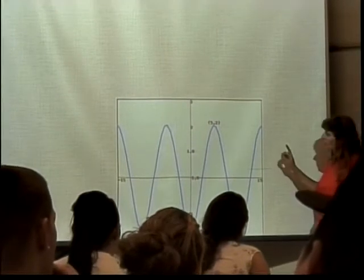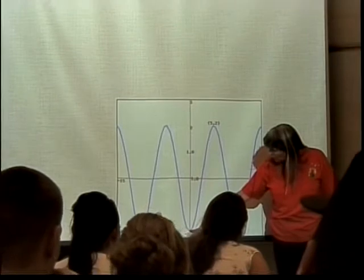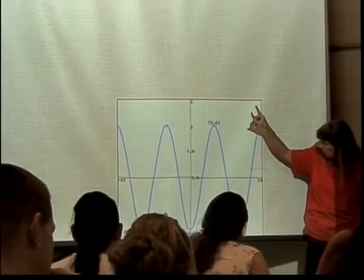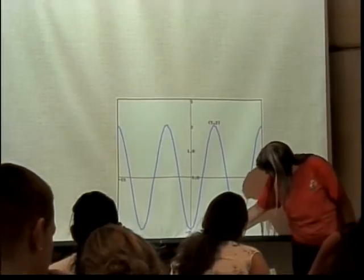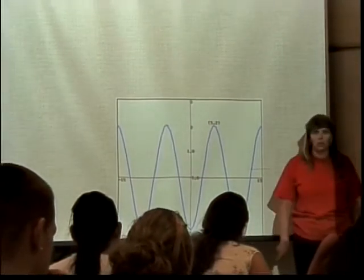This graph goes through a point at 0, negative 2, it goes through a point at 5, 2, and it looks like it goes through a point at 10, negative 2.